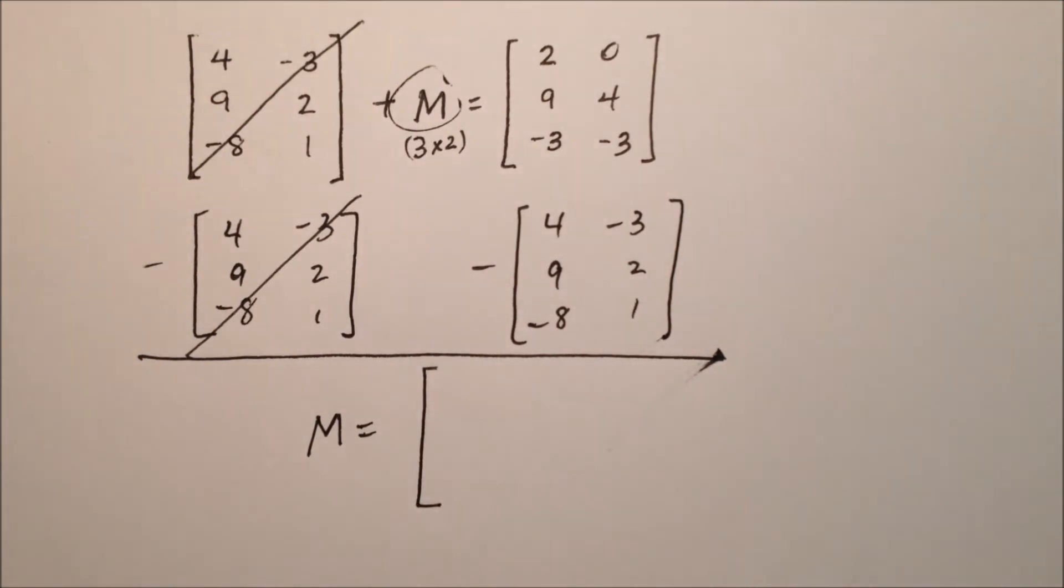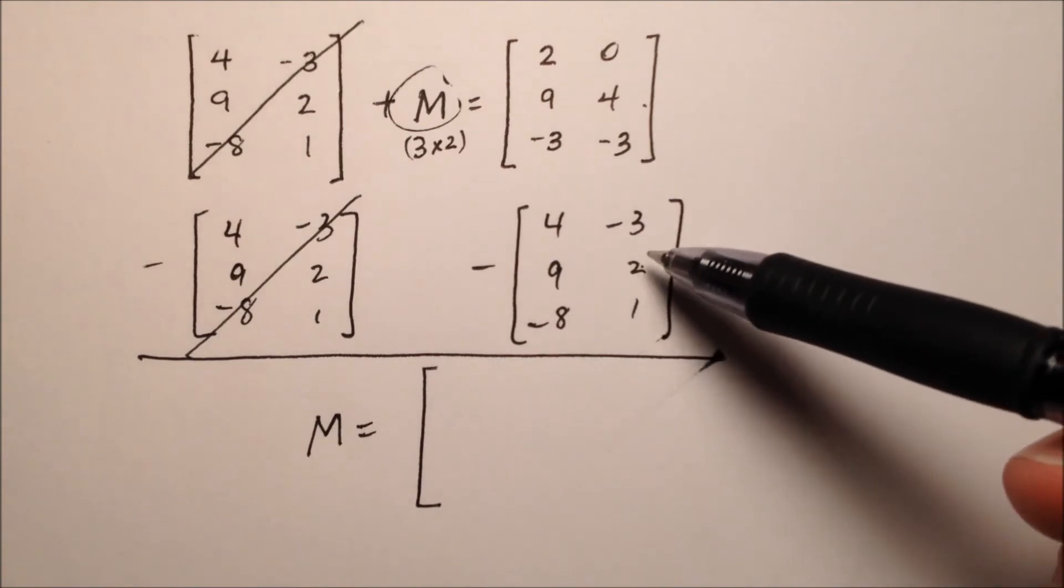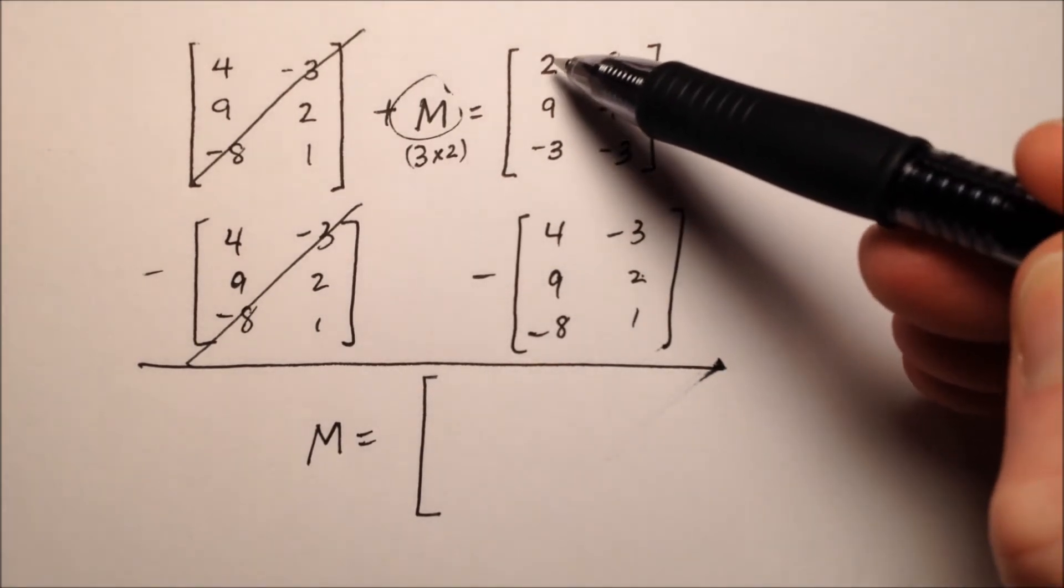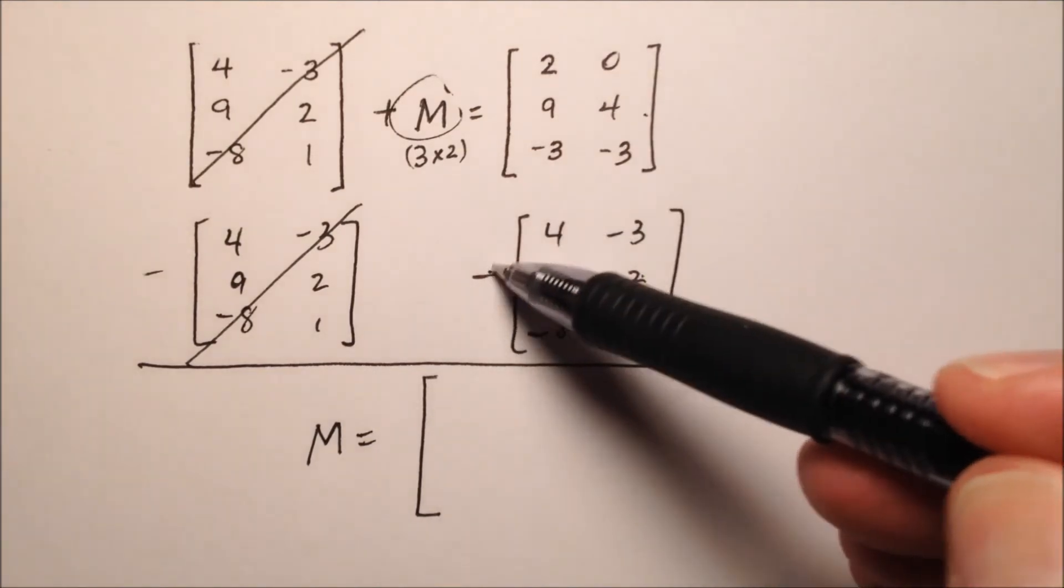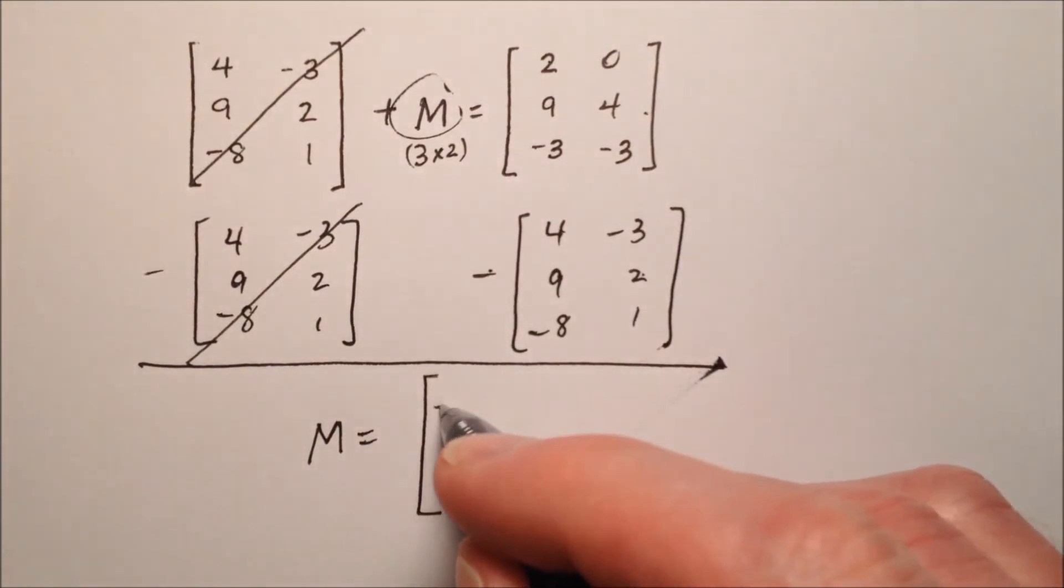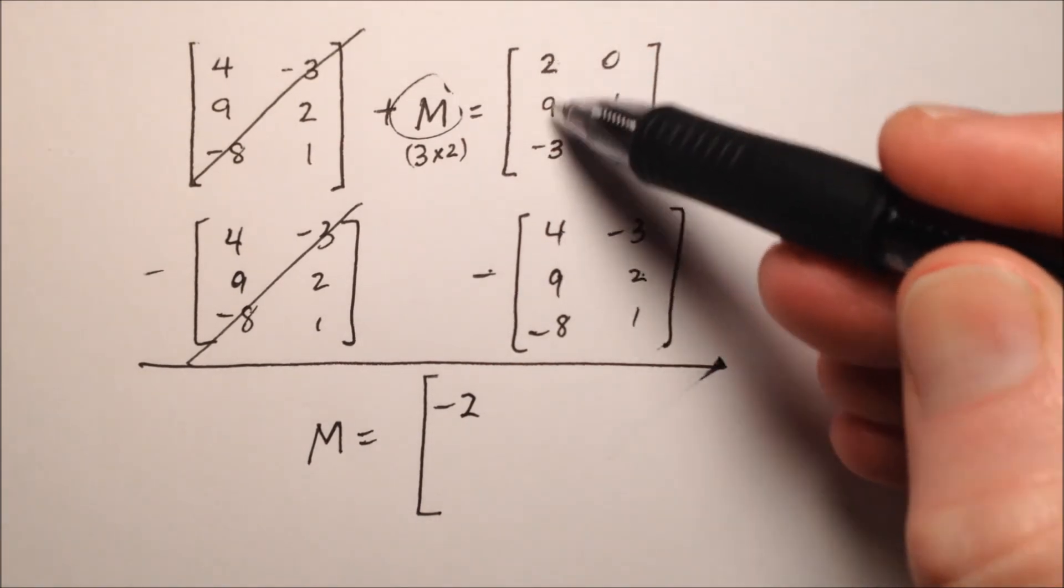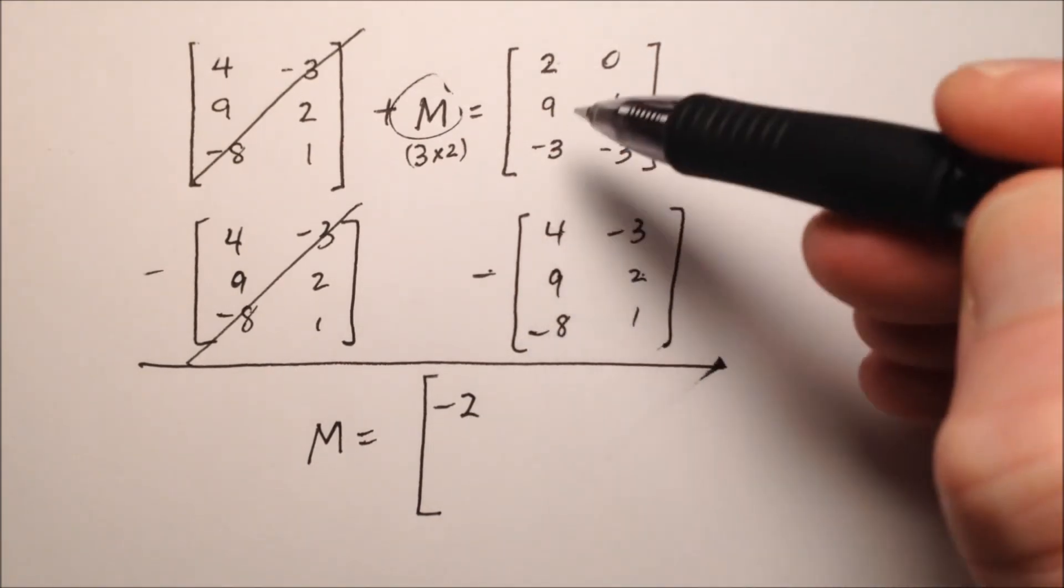So I just need to do this matrix subtraction. So how do we subtract two matrices? Well, we're going to subtract their corresponding entries. So 2 minus 4 is going to be negative 2, and those were in the first row and first column, so I'm going to put that in the first row, first column.